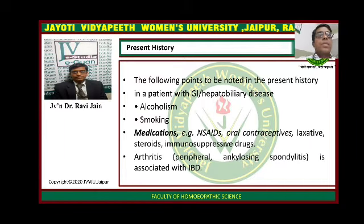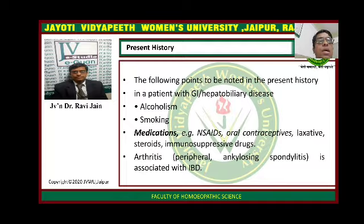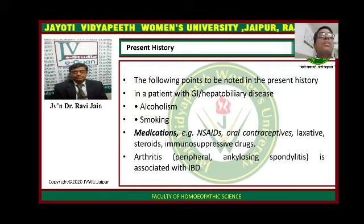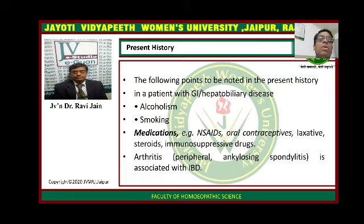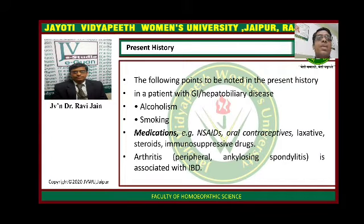Present history. While taking the present history, the following points have to be noted down. In a patient with gastrointestinal or hepatobiliary disease, you should always ask about addiction to alcoholism or smoking — you have to confirm if the patient is taking any kind of alcohol or is a chain smoker or a regular smoker, because these things are directly affecting the GI system in some way or the other.